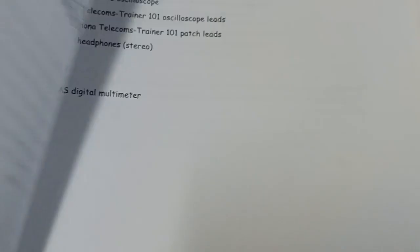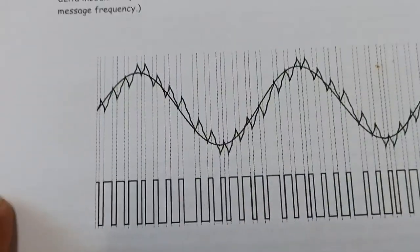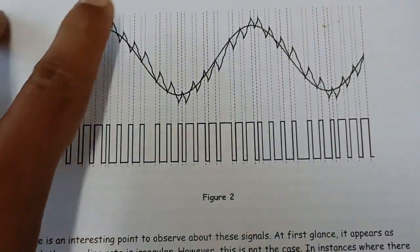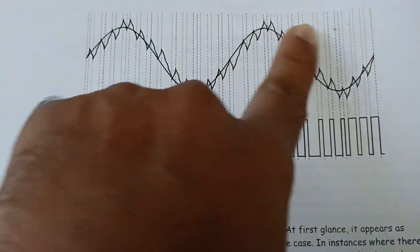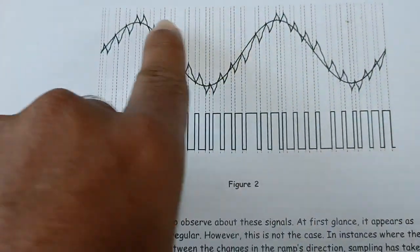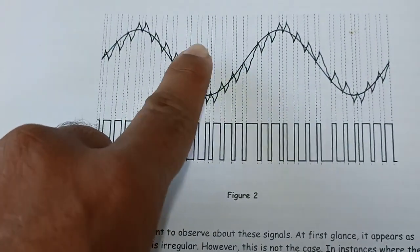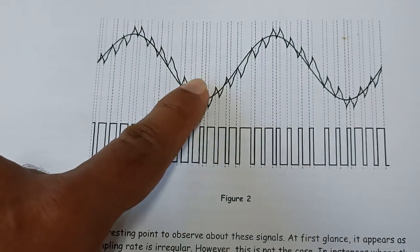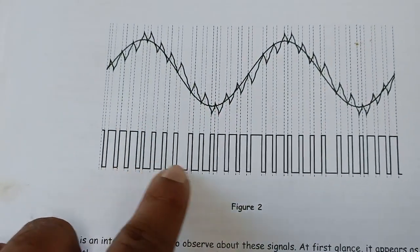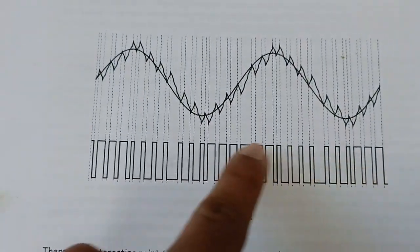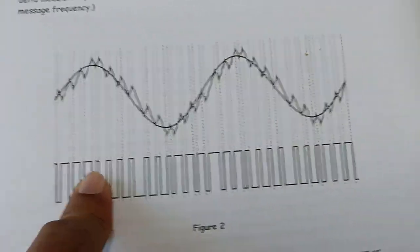The output signal will look like this. This is the sine wave of a 2 kHz signal and two parts are combined into one. This is the delta modulated output of our message signal.